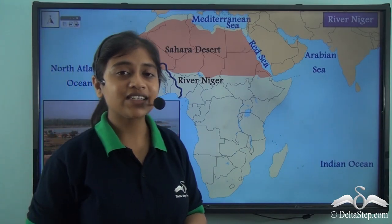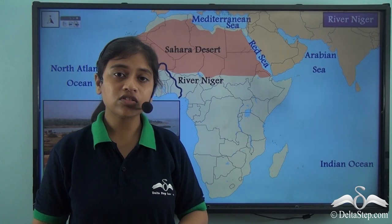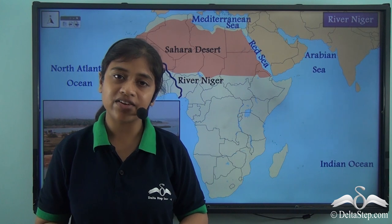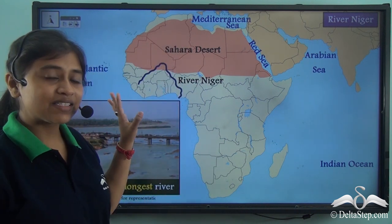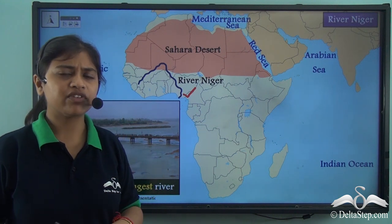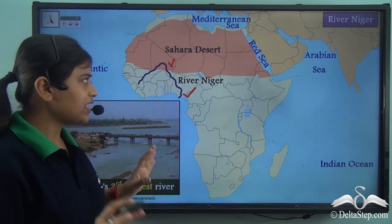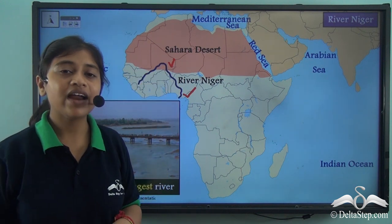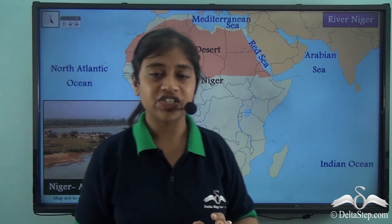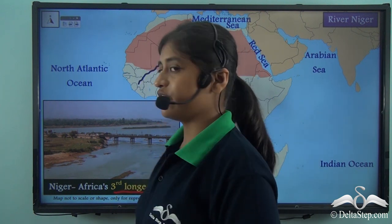We have now looked at three important basins: the Congo Basin, the Chud Basin, and the Nile Basin. We also saw how the Congo Basin and the Nile Basin are drained by the Congo River and the Nile River respectively. There is another important river in the western part of the continent — River Niger. River Niger is the principal river of western Africa and runs through a portion of the Sahara Desert, serving as a permanent source of water in that region. River Niger is the third longest river of Africa after River Nile and River Congo.